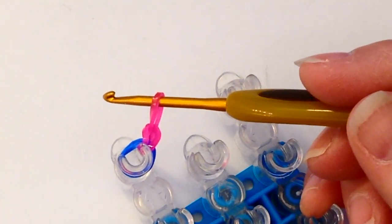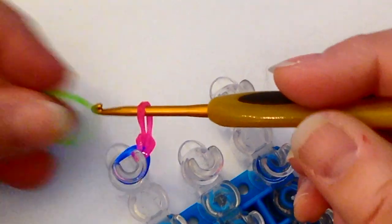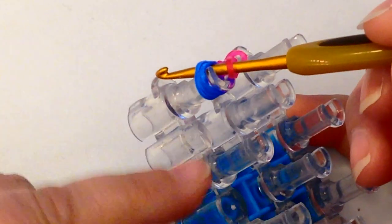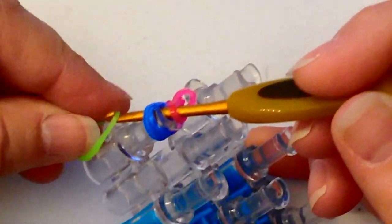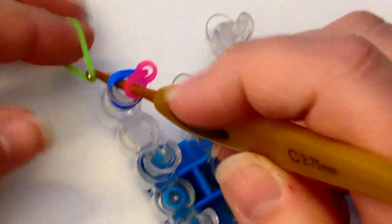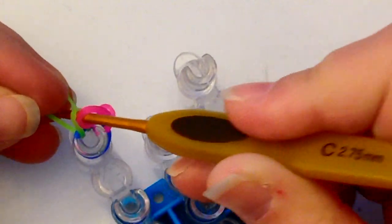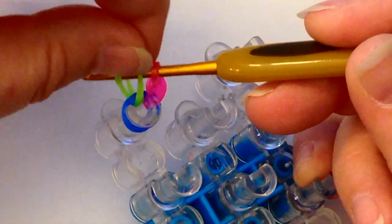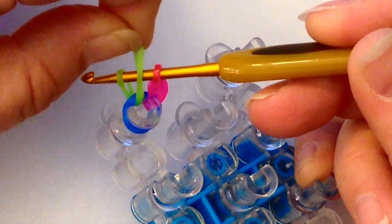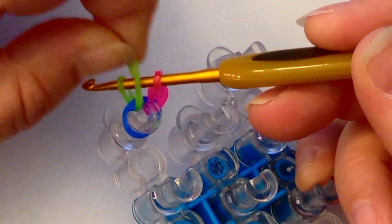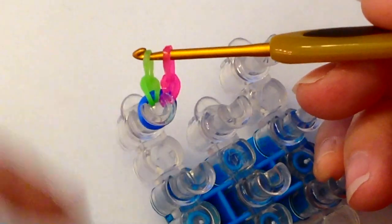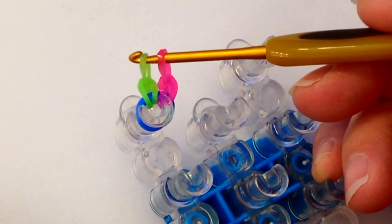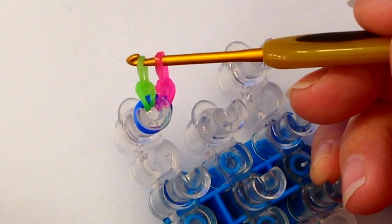Our next color, we'll use green. Go in again through the peg, grab your band—I'm using green for this one—pull it through and again have it on your hook. Take the side that's closest to the end of your hook up and over, so you now have a little pink slip knot and a little green slip knot.